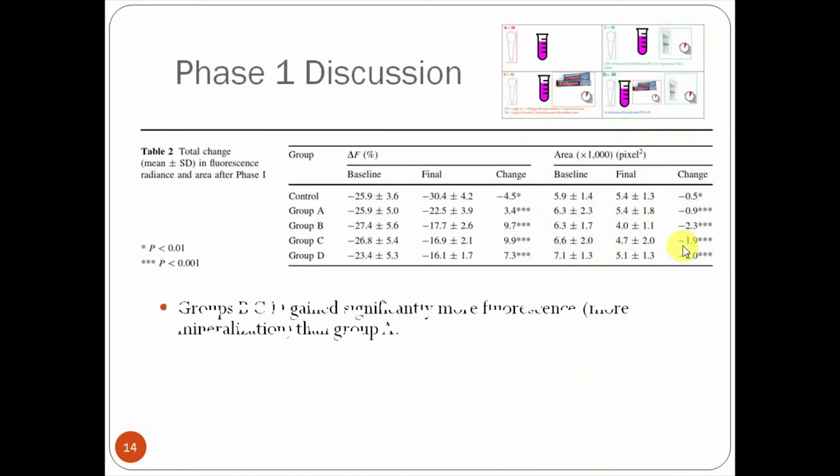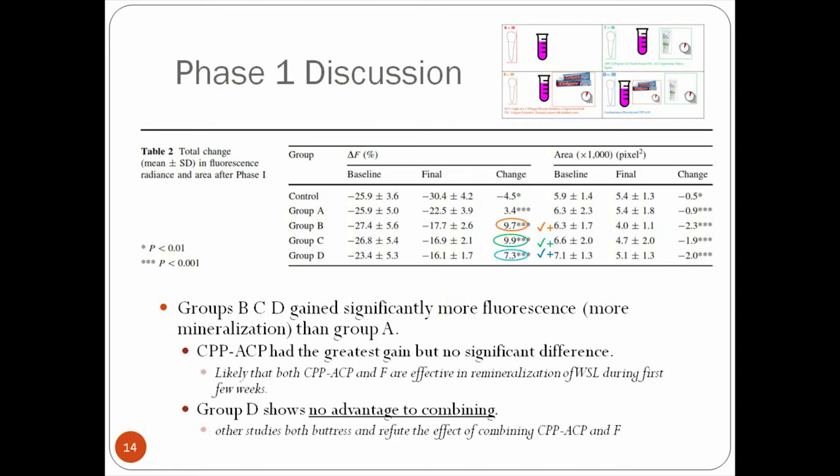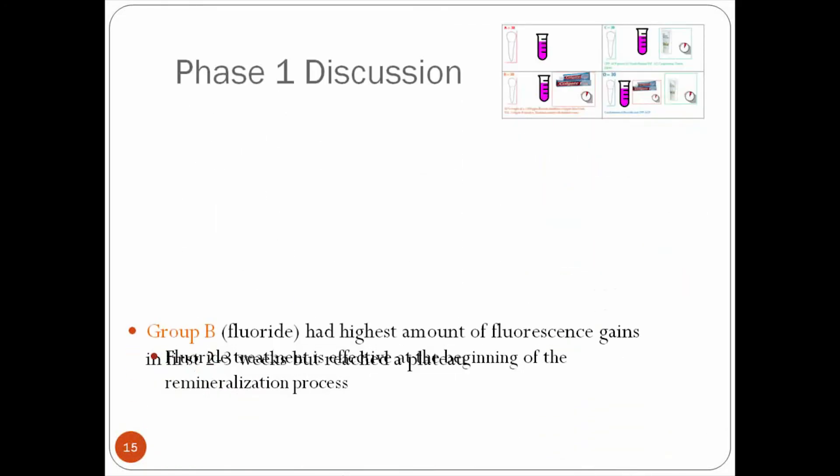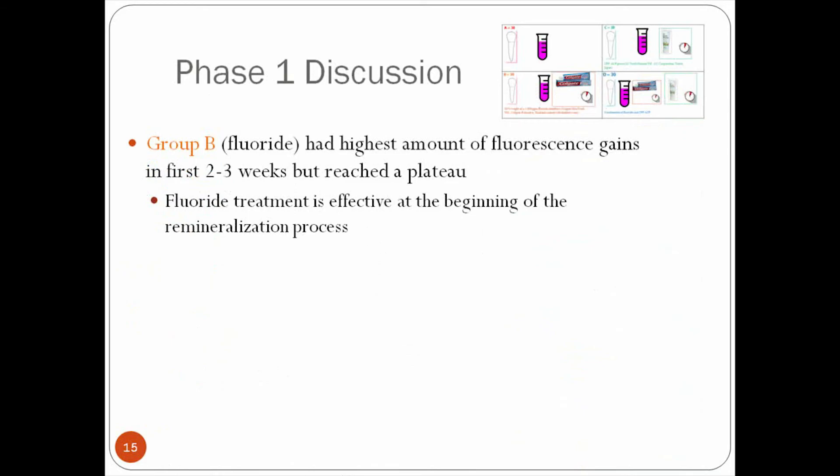Slide number 14, we're going to discuss the phase one. So in phase one, we saw that groups B, C, and D gained significantly more fluorescence than group A. And we know that CPP and ACP had the greatest gain, but again, there's no significant difference. So basically, I gave a good check mark to all of them, because they're all great, and there isn't one that we prefer more than the other. And also, we know that if you combine them, we don't get a better remineralization rate or effect.